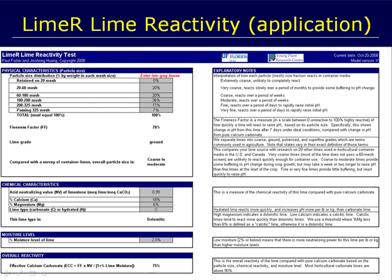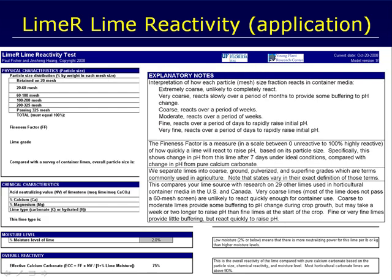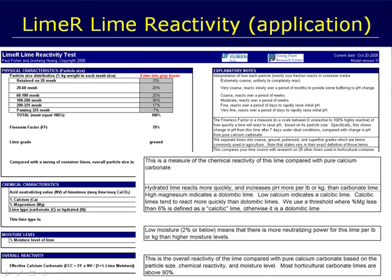There is a spreadsheet to help you make the calculations. You enter information into different gray boxes, and there are also explanatory notes that help you interpret what the information is used for and how it compares with other commercial limestones. You enter in the particle size distribution on a percentage basis, information about how coarse each fraction represents, the acid neutralizing value, calcium, magnesium, lime type, and moisture level.